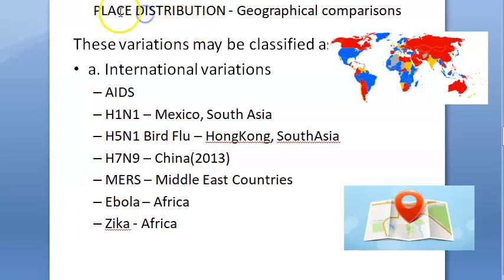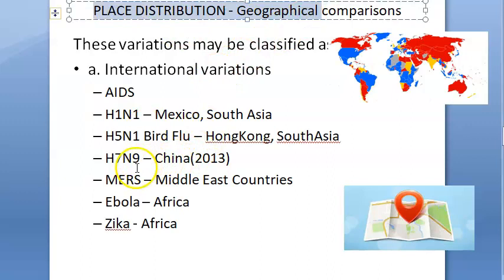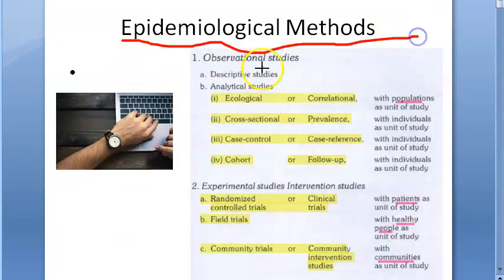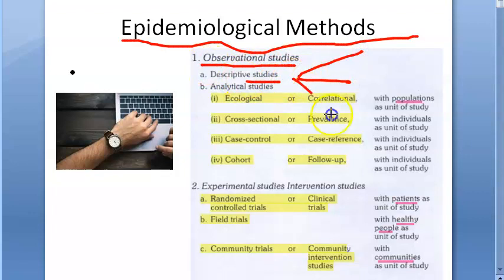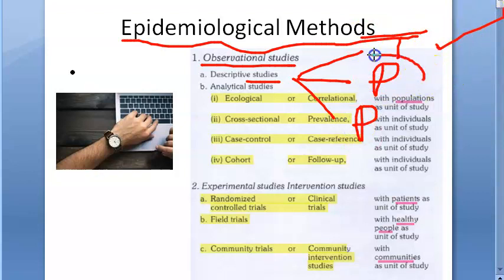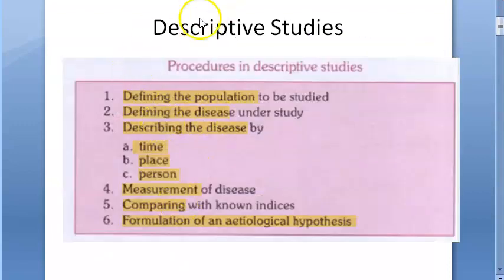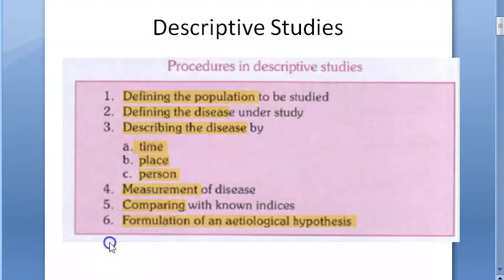In this video we want to look at place distribution of disease. We are looking at epidemiological methods — specifically observational studies, under which we have descriptive studies. Descriptive studies cover time distribution, place distribution, and person distribution. Time distribution was covered in the previous video; now we are looking at place distribution.